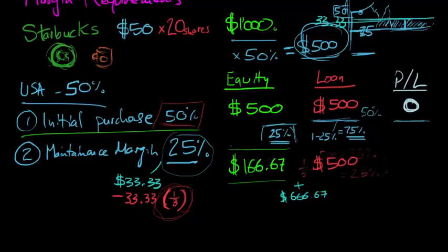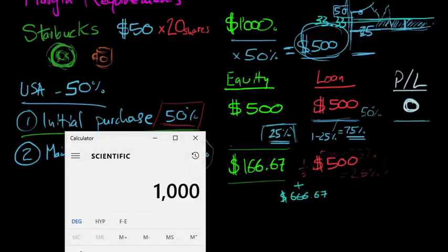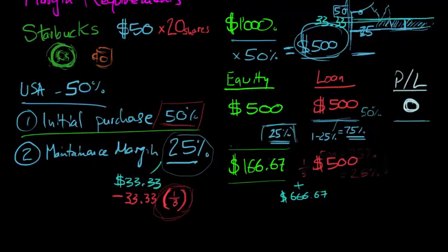And profit and loss at that point will be $333.33 from your $1,000 initial position. We can times it by 0.333333. So the profit and loss will be a negative $333.33, or a third. So the loss, the maximum loss, $333.33 down from $1,000.